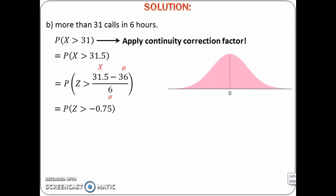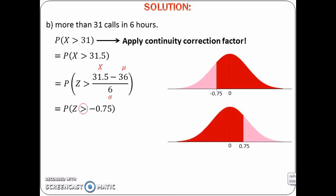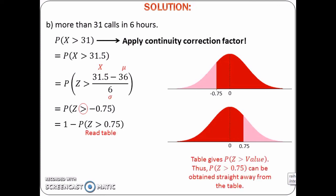After that, draw a bell-shaped graph with 0 at the centre. Plot negative 0.75 on the graph, draw a vertical line, and shade the region of probability that we want to find. Because we want to find the probability of z greater than negative 0.75, the region would be to the right of negative 0.75. To find this probability, change it to probability of z less than positive 0.75, then take 1 minus the probability of z greater than positive 0.75. Read the probability of z greater than 0.75 from the table and calculate the final probability.